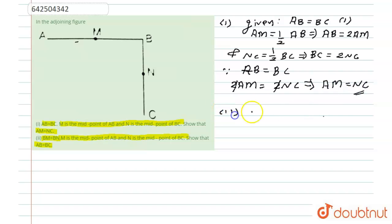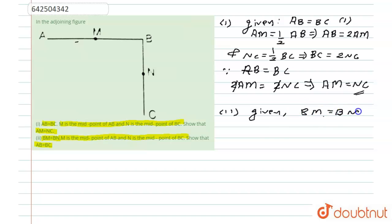And for the second part, it is given that BM is equal to BN. And since M is the midpoint of AB and N is the midpoint of BC respectively, we can write that BM is equal to half of AB.